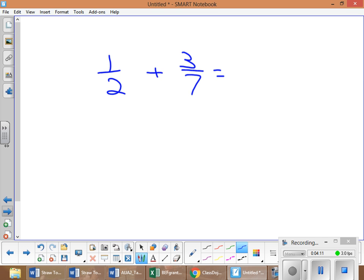Let's look at here. We have to find a common denominator. We have two and seven, so two, four, six, eight, ten, twelve, fourteen. Then do your seven: seven and fourteen. Looks like fourteen is our common denominator.